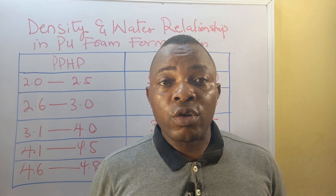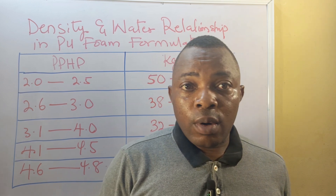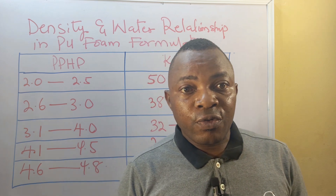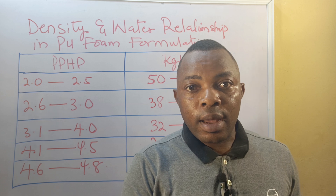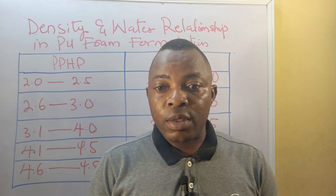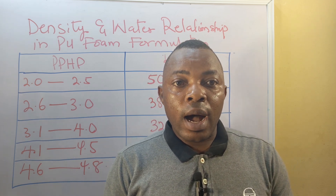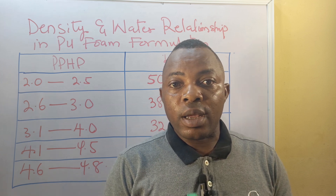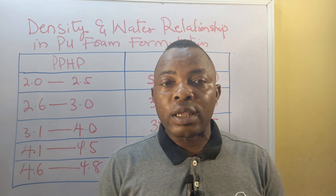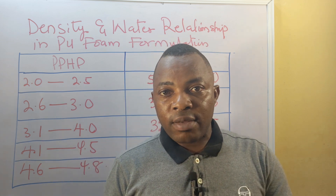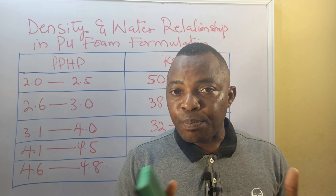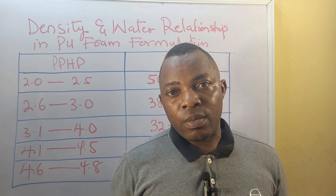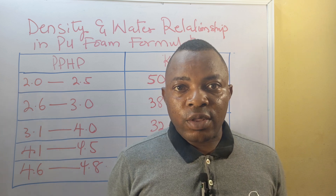Today we shall be looking at the relationship between density and water. This data was generated from formulations without methylene chloride. Methylene chloride and water are determining factors that determine the density at which one intends to produce, because methylene chloride acts as a coolant while water acts as the chief blowing agent.